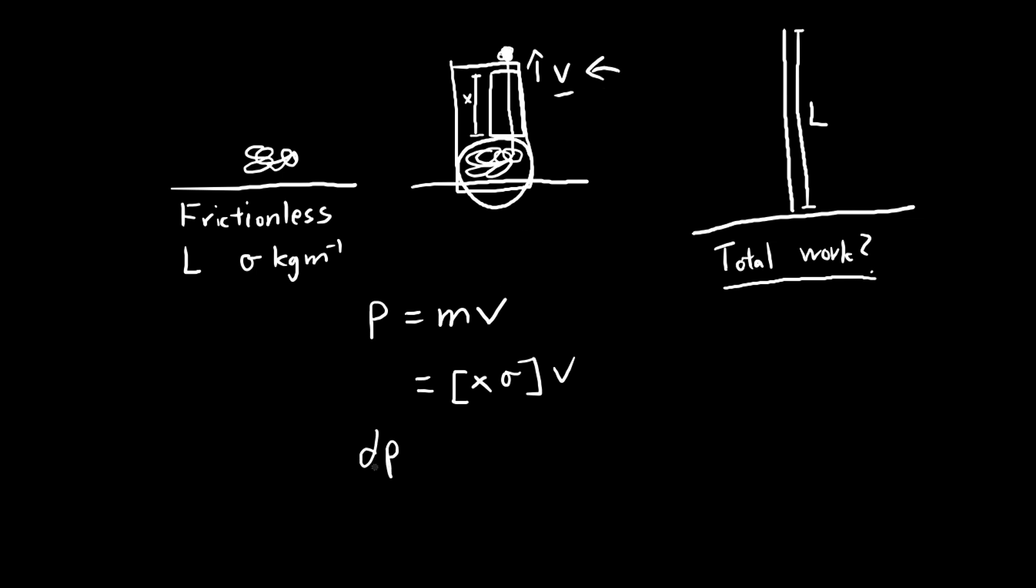So we take the derivative with respect to t. We get dx dt. Well dx dt is just v because x is the distance traveled by the hand and it's traveling upwards at a rate of v. So what is the change in momentum equal to? Well this is equal to the net force acting upon the entire system.